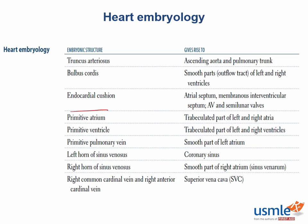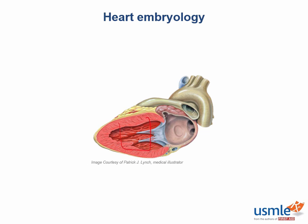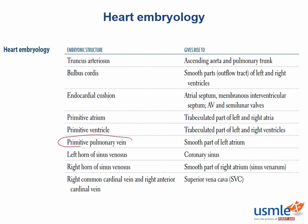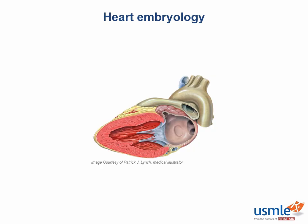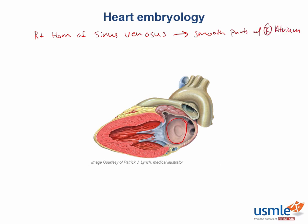Next, let's move on to the primitive atrium and ventricle. These will form the trabeculated parts of the left and right atria and ventricles respectively. You can see an example of ventricular trabeculations in this image — the trabeculated parts of each chamber are these large septations of columnar muscle tissue. Next, we'll cover the primitive pulmonary vein and the right horn of the sinus venosus, which form the smooth parts of each atrium. The right horn of the sinus venosus will form the smooth parts of the right atrium, and the primitive pulmonary vein will form the smooth parts of the left atrium.